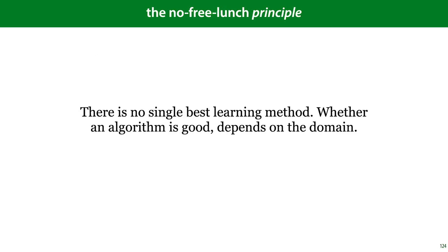Whether or not the no free lunch theorem means anything for us in practice, it has also given rise to a general principle commonly followed in machine learning: we should choose our method to deal with the task at hand and not look for a universally best method. Note that this is distinct from the NFL theorem because everybody still uses data splitting universally to evaluate which of these many methods is the best — and by the NFL theorem, model selection by data splitting is also not a universal algorithm, despite the fact that we do use it universally.